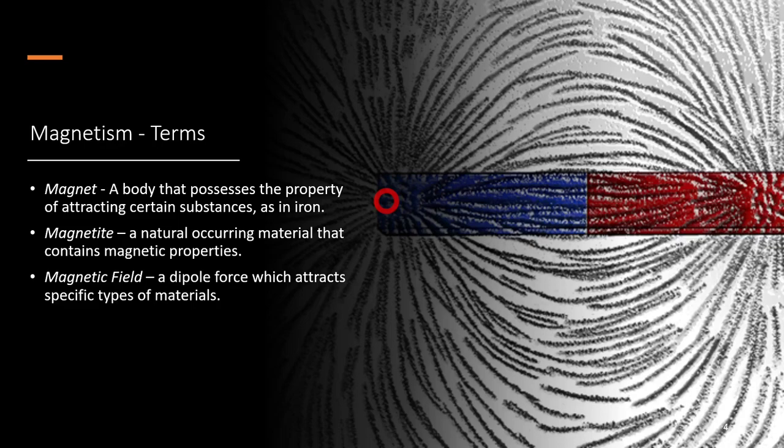Magnetic field: a dipole force that attracts specific materials. If it attracts a material, that material is called magnetic. Dipole is just a fancy way of saying it has two poles - 'di' meaning two - a north and a south pole.